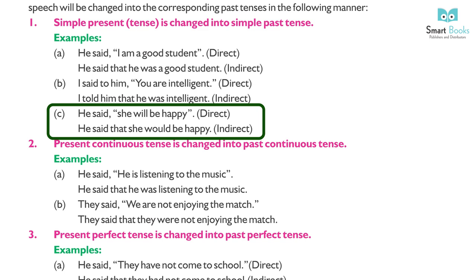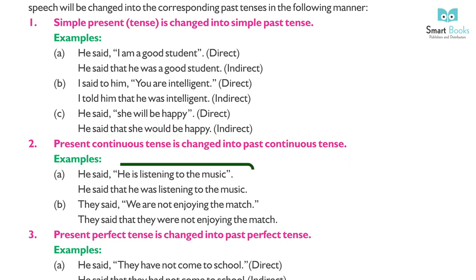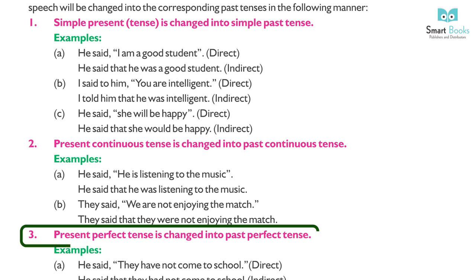(2) Present Continuous changes to Past Continuous. Examples: (a) He said, 'He is listening to the music.' → He said that he was listening to the music. (b) They said, 'We are not enjoying the match.' → They said that they were not enjoying the match. (3) Present Perfect changes to Past Perfect.